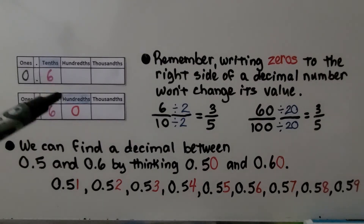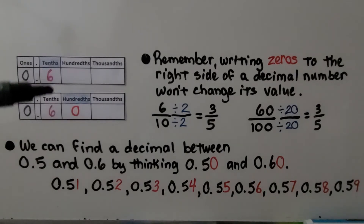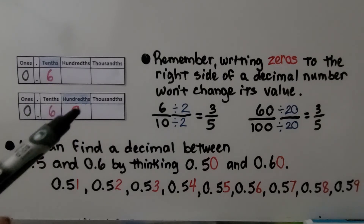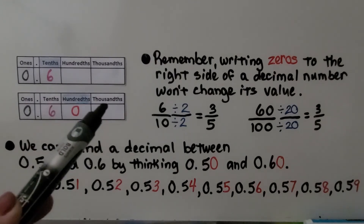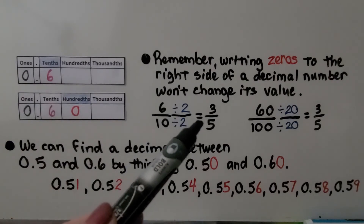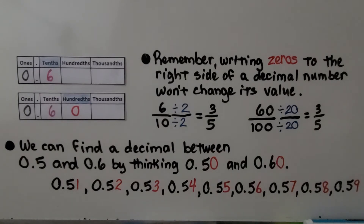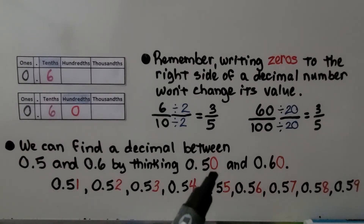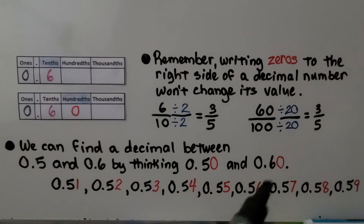Remember, writing zeros to the right side of a decimal number won't change its value. 6 tenths is the same as 60 hundredths or 600 thousandths. 6 tenths simplifies to 3 fifths, and 60 hundredths also simplifies to 3 fifths. We can find a decimal between 5 tenths and 6 tenths by thinking of 50 hundredths and 60 hundredths — just place any digit from 1 through 9 in the hundredths place to get a value between them.